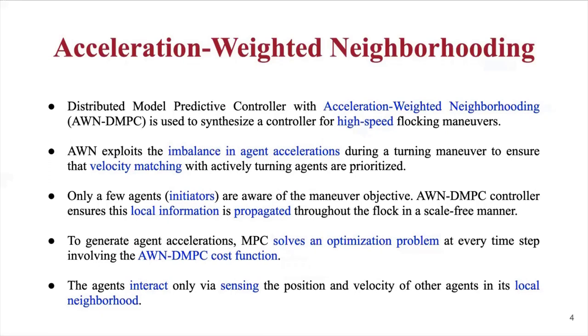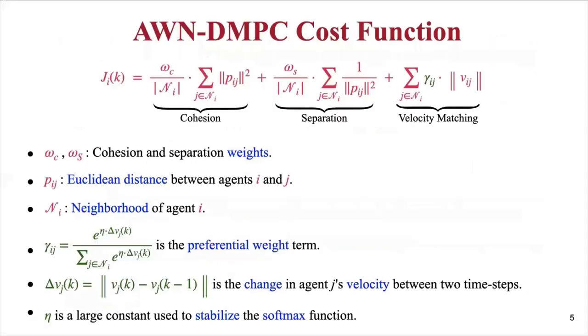AWN exploits the imbalance in agent accelerations during a turning maneuver to ensure that velocity matching with actively turning agents are prioritized. What this means is that once the turn is initiated by few agents called initiators, they will have a larger acceleration compared to the rest, which will create an imbalance causing its local neighbors to velocity align with the initiators. And gradually, this propagates through the entire flock, and now the entire flock is moving in a new direction. We use a distributed MPC controller to optimize our cost function to generate the optimal accelerations at every time step. Also, the agents interact only by sensing the position and velocity of its local neighbors.